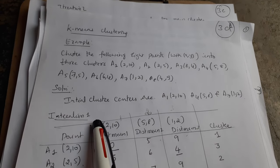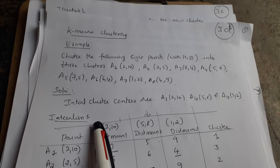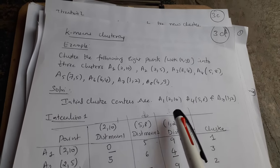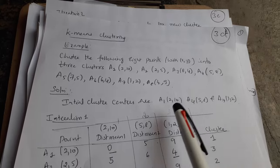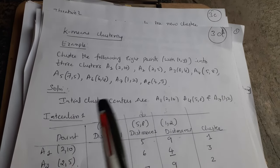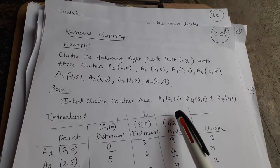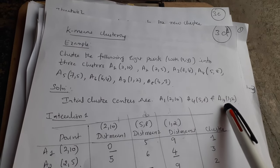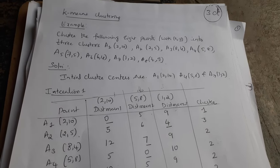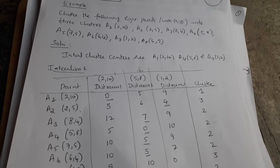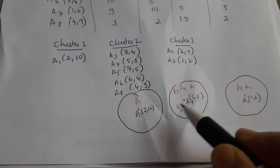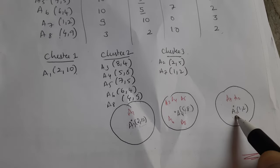The first step in the algorithm is to define the cluster centers. These are randomly defined cluster centers — I have taken A1, A4, and A7. We can take any points as cluster centers. As you can see in the figure, I have taken A1, A4, and A7 as the cluster centers.